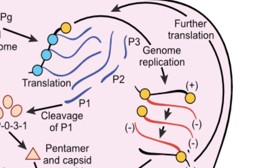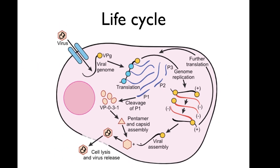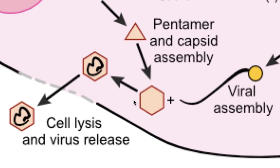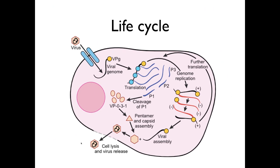A little bit later, you then have further translation. And then even a little bit later, this negative strand is copied into positive strands. These positive strands assemble with the pentamers of the VP proteins to make a capsid. That capsid then assembles, you have cell lysis and release. This is typical of positive single-stranded RNA viruses and how they replicate, which is one of the reasons we include it — it's a good example of that, and it's also a very common illness.